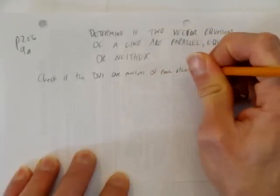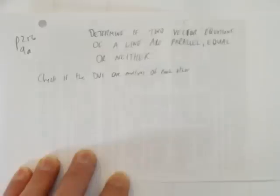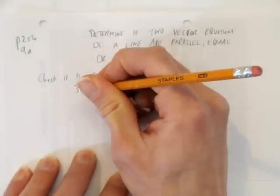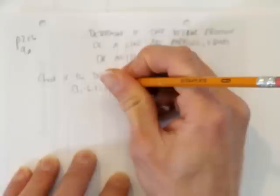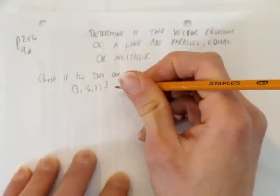So the first thing we want to do is look at the direction vectors. If the direction vectors are multiples of each other, they're at least parallel. So the direction vectors are 3, negative 6, 3, and I'm going to put equals question mark, because I don't know if they're equal yet,